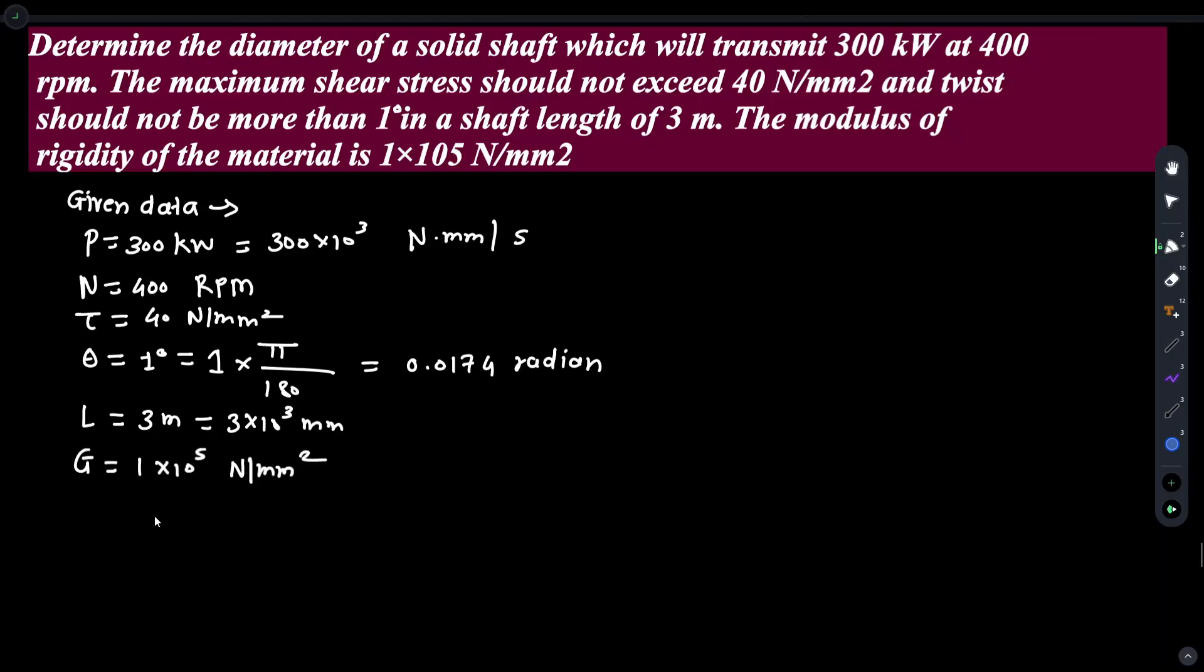Determine the diameter of a solid shaft which will transmit 300 kW power, so P equals 300 kW converted into Newton millimeter, and 400 rpm, so N equals 400 rpm. The maximum shear stress...